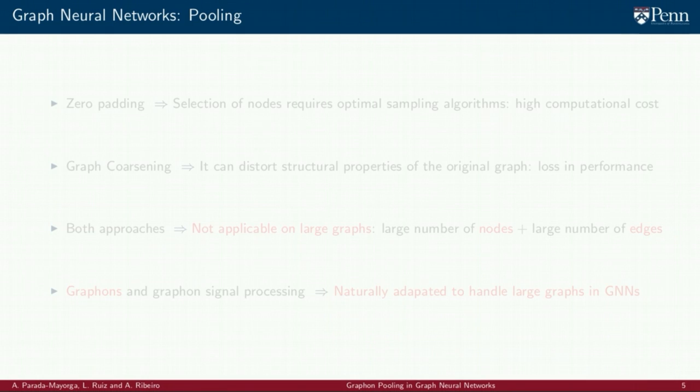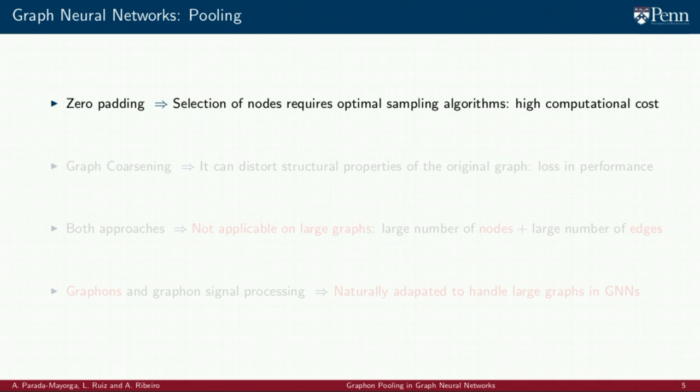Both zero-padding and graph coarsening have shown comparable performance in diverse scenarios, but they also exhibit some limitations. In particular, to use zero-padding we require a selection of the nodes in the graph where we intend to keep the information different from zero. This requires the application of optimal sampling techniques, which in general have a high computational cost.